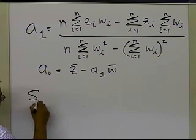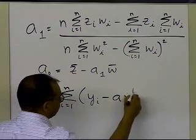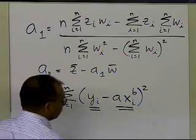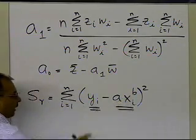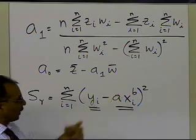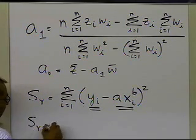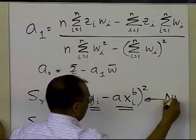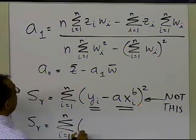It's important to note what we are actually minimizing. Ideally, we'd minimize the sum of the square of the residuals between the observed y values and the predicted y values. However, doing so leads to two simultaneous nonlinear equations. So instead, when using the transformed data, what you are actually minimizing is the sum of the square of the residuals between the z values and the predicted z values from the linear regression model.